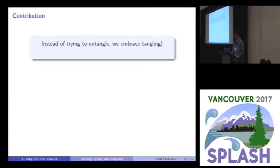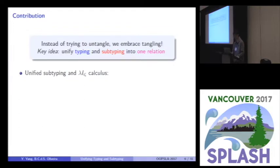So, here is our contribution. We took a different approach to deal with this problem. Instead of trying to untangle typing and subtyping, we just embraced this tangling. The key idea here is that we unify typing and subtyping into the same relation. We propose this new idea called unified subtyping and the application of it called lambda i sub calculus. We have only one single relation for both subtyping and typing.